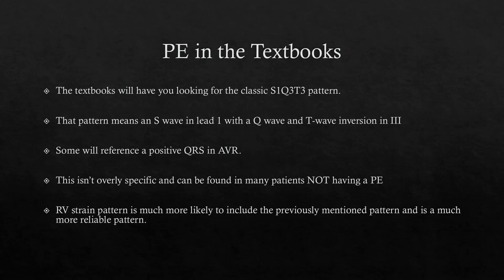As I said, textbooks have you looking for S1Q3T3, but it was only found as specific in 20% of cases. You'll also see references to a positive QRS complex in AVR — that is neither specific nor sensitive. There are lots of things that cause positives in AVR, including nonspecific idioventricular conduction delays. If you want to diagnose PE, look for that RV strain pattern — that is going to key you in.